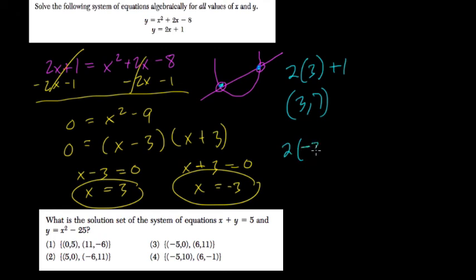Then the other one would be 2 times negative 3 plus 1, that's negative 6 plus 1, or negative 5, so the other point is negative 3, 5, and that's your answer. Thank you.